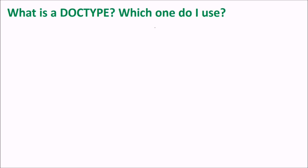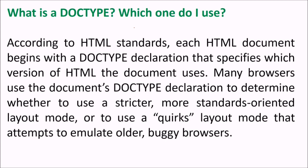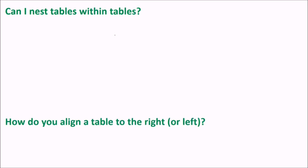What is a doctype and which one do you use? According to HTML standards, each HTML document begins with a doctype declaration that specifies which version of HTML the document is using — HTML 3, 4, or 5, and we are now on HTML5. Many browsers use the doctype declaration to determine whether to use a stricter, standards-oriented layout mode or a quirks layout mode that emulates older browsers.